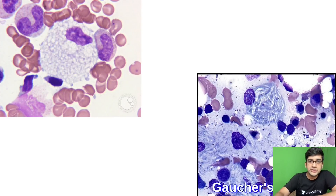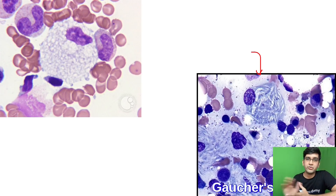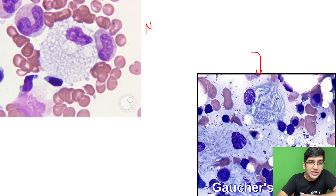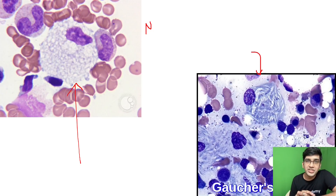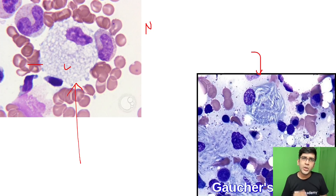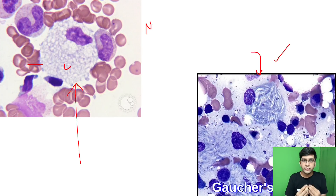In Gaucher's, the classical finding is crumpled tissue paper appearance — it looks folded, like a crumpled tissue paper. Both images are from the American Society of Hematology. In Niemann-Pick's, what I see is lots of cholesterol — you can see the bubbly cytoplasm; those vacuoles in the cytoplasm of the macrophage are cholesterol deposits. In both diseases the macrophage becomes enlarged, resulting in hepatosplenomegaly. Gaucher's has ceramide accumulation, which gives the crumpled tissue paper appearance.